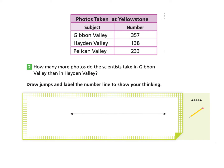Let's take a look at Part 2: How many more photos do the scientists take in Gibbon Valley than Hayden Valley? Using the same chart, Gibbon Valley has 357 photos and Hayden Valley has 138 photos. Our equation is 357 minus 138 equals an unknown number, which gives us the difference of how many more photos Gibbon Valley has.